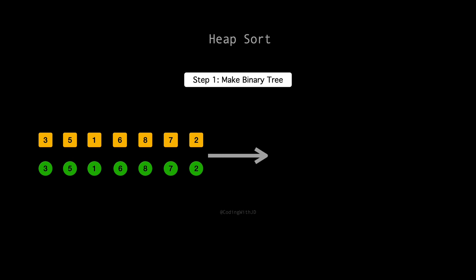First up, we place 3 at the root. That's our starting point. Next, 5 goes to the left of 3. It's our first child. Moving on, 1 slides in as the right child of 3. Now we're adding 6. It'll be the left child under 5. Then comes 8. It goes right under 5 as the right child.